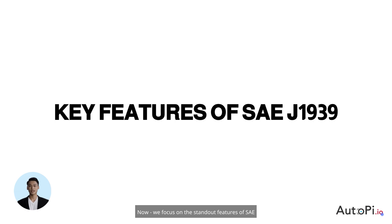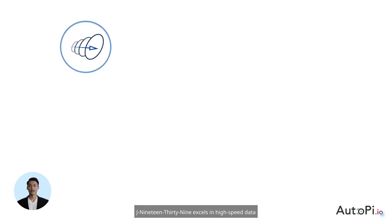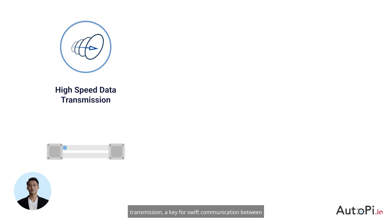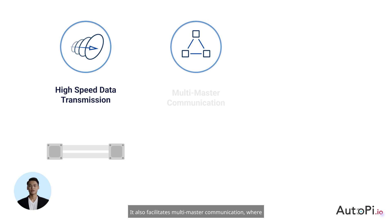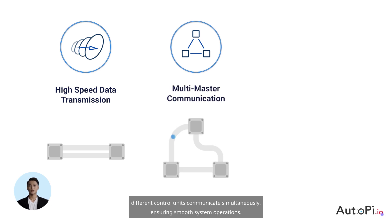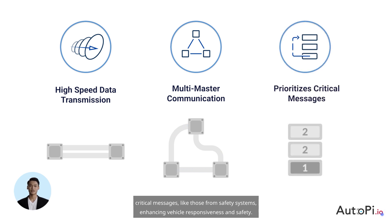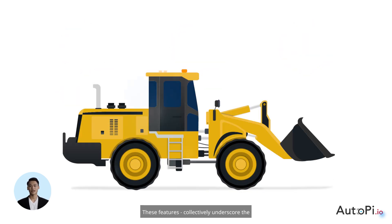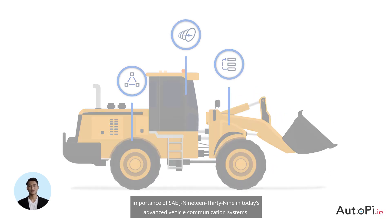Now, we focus on the standout features of SAE J1939, a protocol central to modern vehicle communication. J1939 excels in high-speed data transmission, a key for swift communication between vehicle components, crucial for real-time responses and system efficiency. It also facilitates multi-master communication, where different control units communicate simultaneously, ensuring smooth system operations. More importantly, J1939 prioritizes critical messages, like those from safety systems, enhancing vehicle responsiveness and safety. These features collectively underscore the importance of SAE J1939 in today's advanced vehicle communication systems.